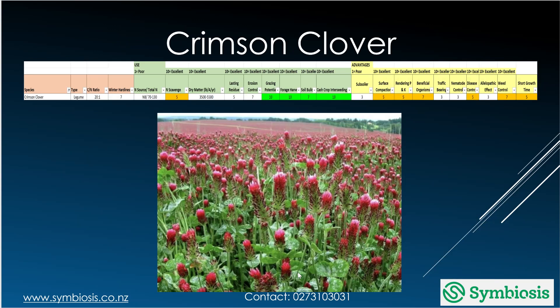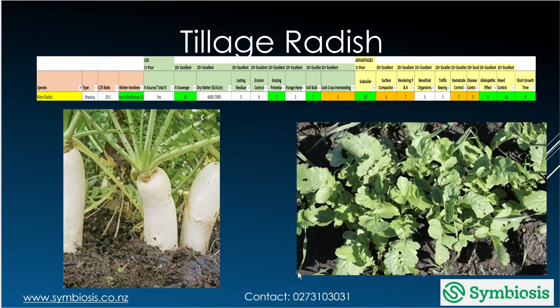Crimson clover is good for grazing and very good for beneficial organisms. Tillage radish is very good at scavenging nitrogen — it's a nitrogen sink that sets things up with decomposers for the next plant. It's reasonably okay for grazing, good for soil building, and a great subsoiler because it breaks down through pans and gets into the soil profile, also rendering phosphorus and potassium.